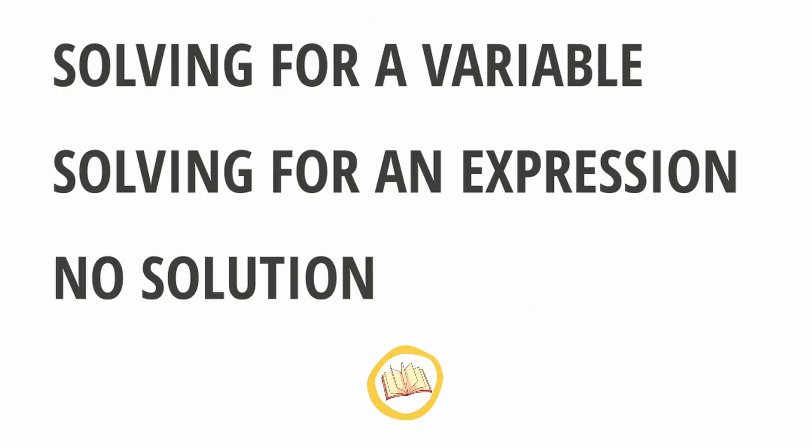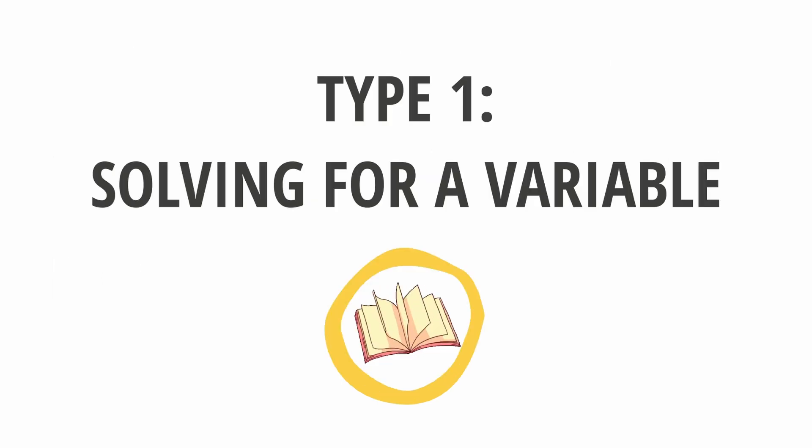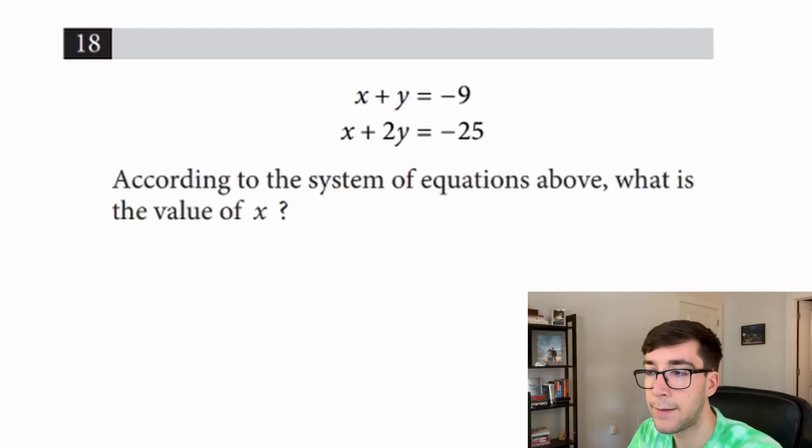The three types of systems questions you'll see are: solving for a variable, solving for an expression, and then no solution. Let's start with solving for a variable which is the most straightforward. First question here we can immediately tell it's a systems question because it has two equations.